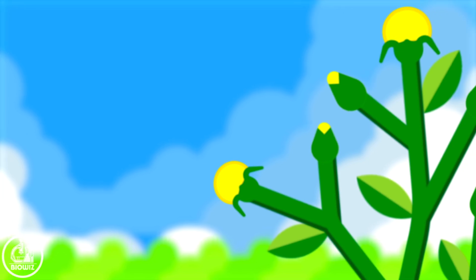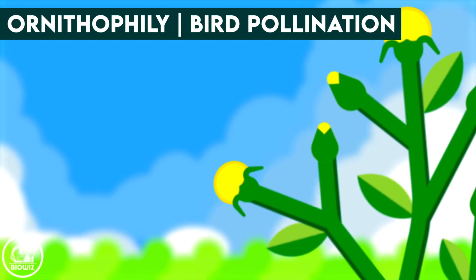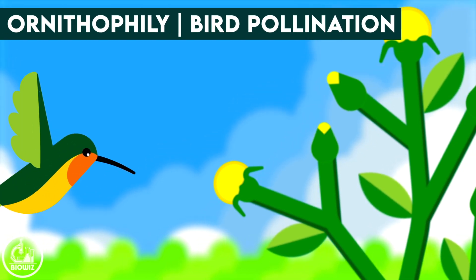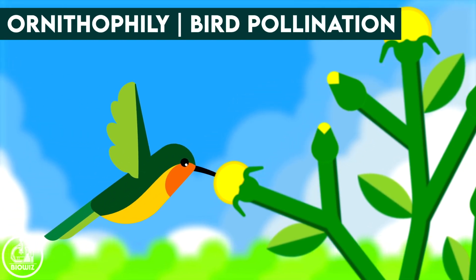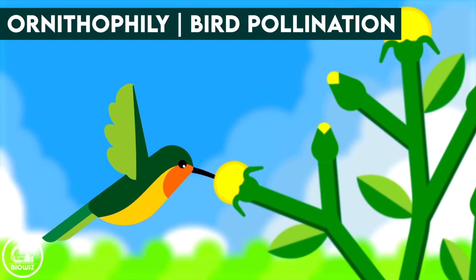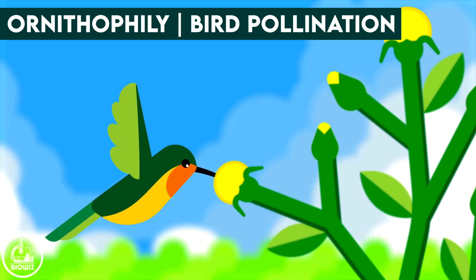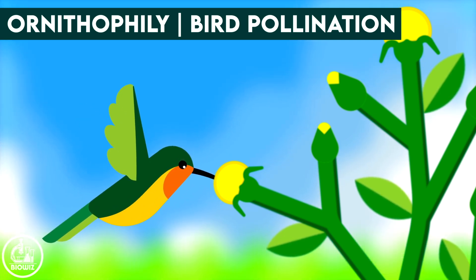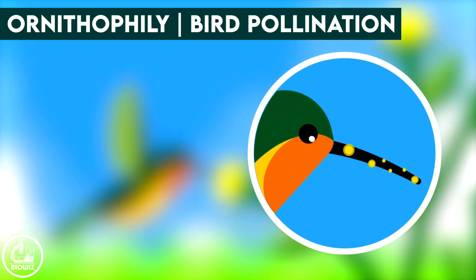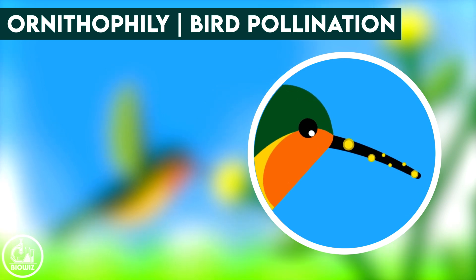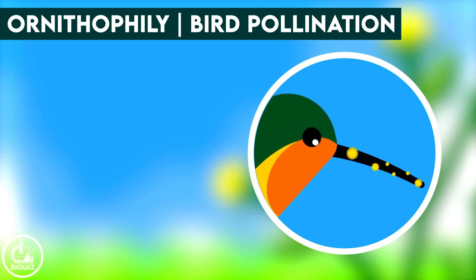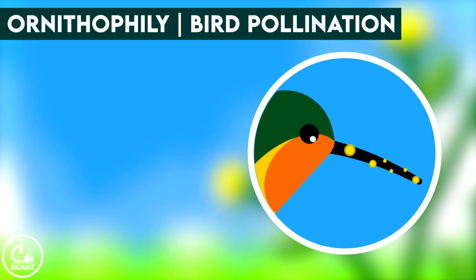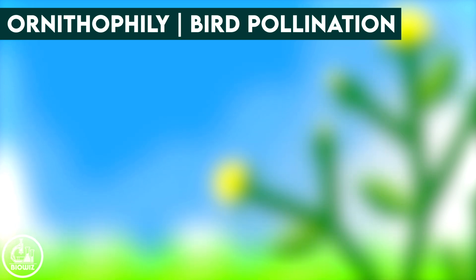Bird pollination or ornithophily: birds like the hummingbird have a long bill and tongue which allows them to easily obtain nectar from the flower. During this process, pollen gets dusted on the bill of the bird and when this bird reaches another flower, pollination can occur.